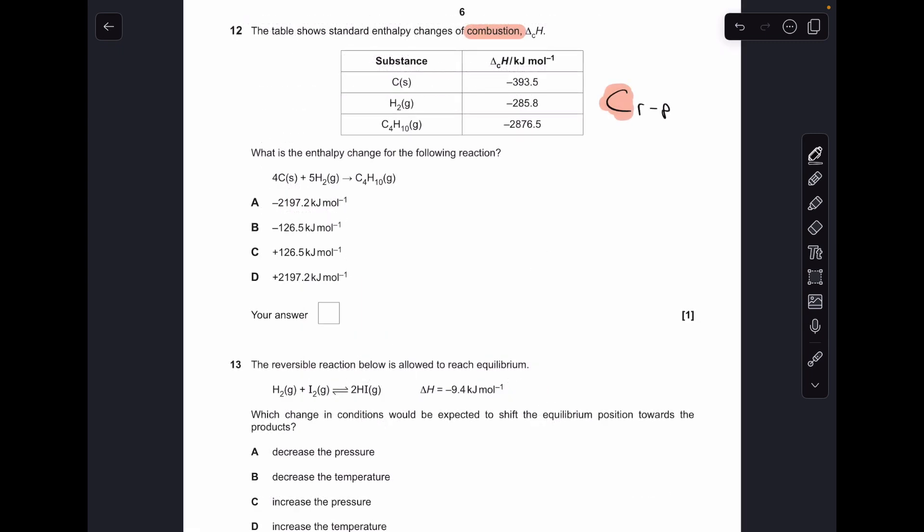Number 12, we've got a table full of enthalpy changes of combustion. I'm going to use them to calculate the enthalpy change for the reaction. So there's my little reminder: C for combustion, R minus P, reactants minus products. So there's the formula in full. It's the sum of the enthalpy change of combustion of all your reactants, minus the sum of the enthalpy change of combustion of all your products. So there's all the numbers in there, and when you put that in your calculator, you should have got option B minus 126.5.